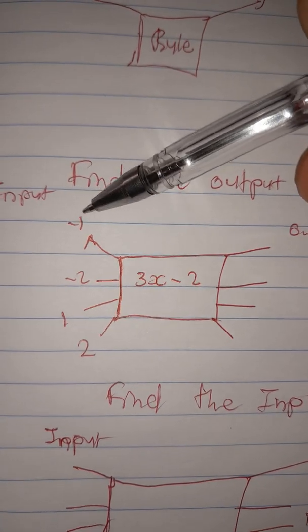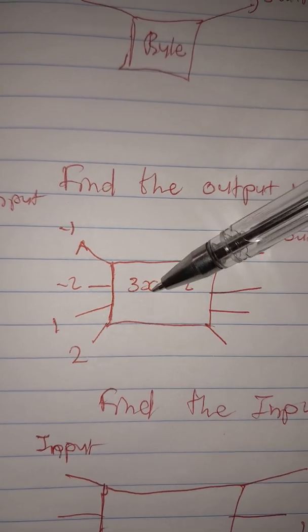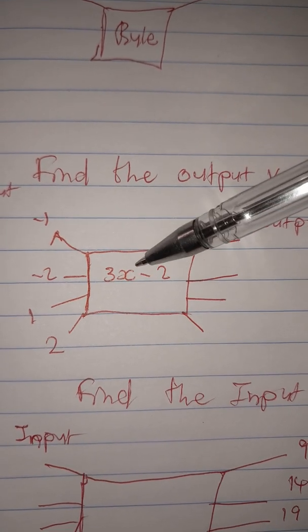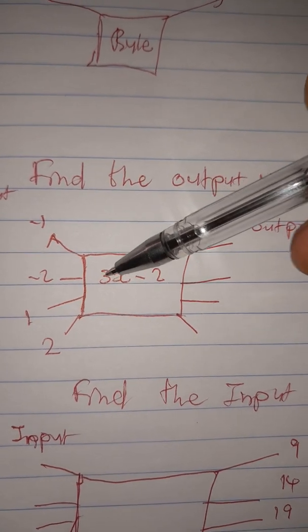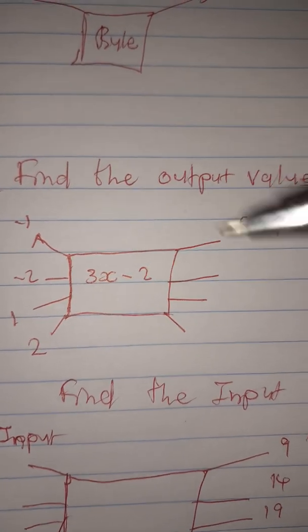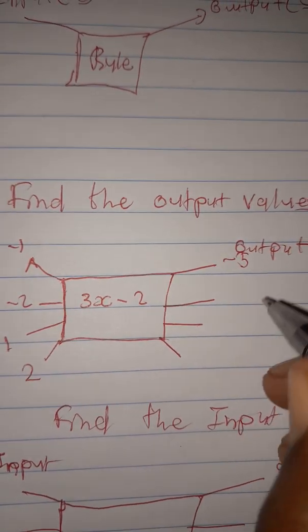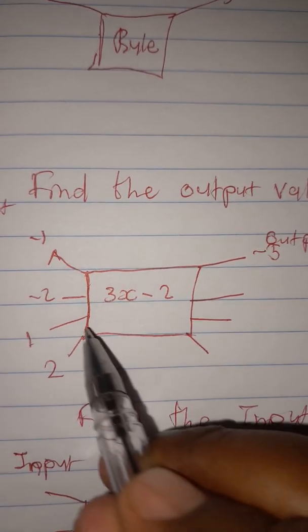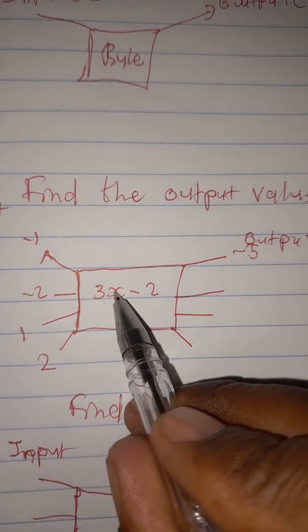We will take the input, which is your x value, and substitute it into the rule. For x = -1: three times negative one is negative three, and negative three minus two is negative five. So our first output is negative five. For x = -2: three times negative two is negative six, and negative six minus two is negative eight.